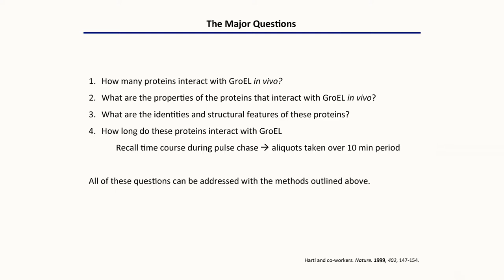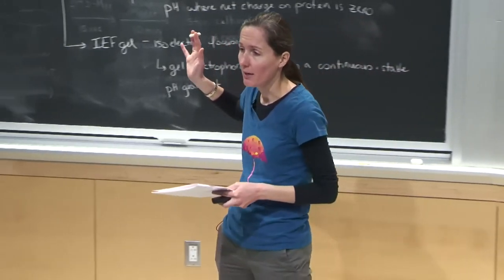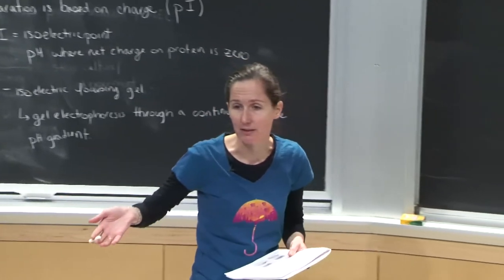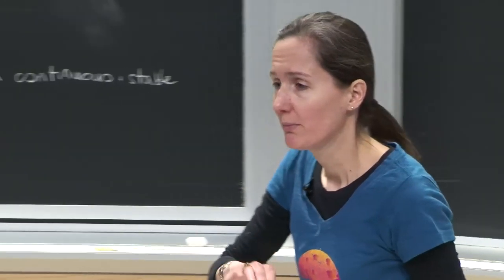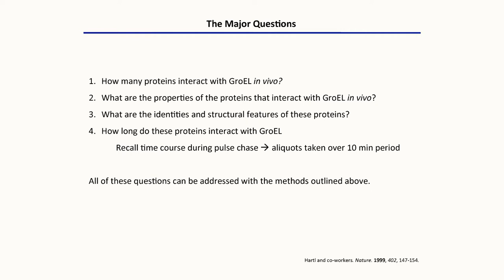So what are the major questions? And what are we going to look for answers for in the data here? So first, how many proteins interact with GroEL? We can imagine getting an answer to this by counting the number of spots. What are the identities and structural features and properties of the proteins that interact with GroEL? We're going to get that from the mass spec analysis and then literature studies. And then another question we can get at is asking how long do proteins interact with GroEL, right? Because we're doing the pulse chase. Samples were taken at various time points over that 10-minute period. So at two minutes, do we see the same polypeptides associated as we see at 10 minutes? Or if we monitor one given polypeptide, when does it show up and potentially disappear from the gels? So all of these questions can be addressed with these methods.